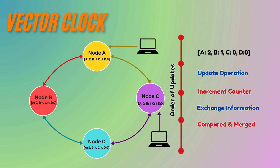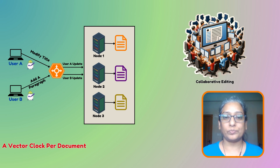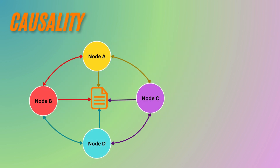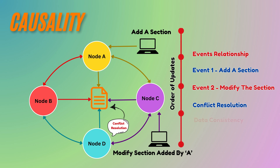In a collaborative editing application, each document at each node has its own vector clock, which helps track updates from multiple users. Before diving into specific examples, let's understand the concept of causality in distributed systems. Causality refers to the relationship between events where one event can be said to have caused or influenced another. Understanding this relationship is crucial for resolving conflicts in distributed systems — it tells us whether an event should precede or follow another, ensuring data consistency. Vector clocks help track and represent this causality.